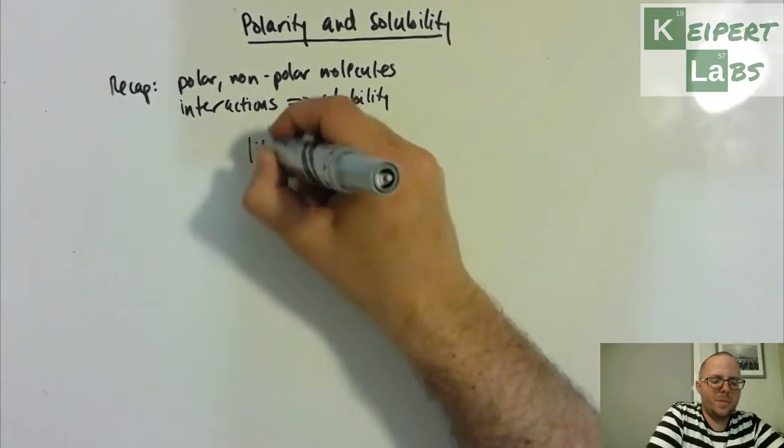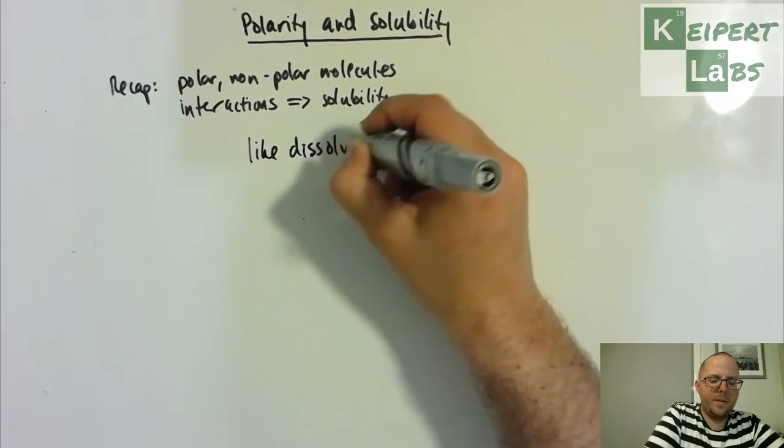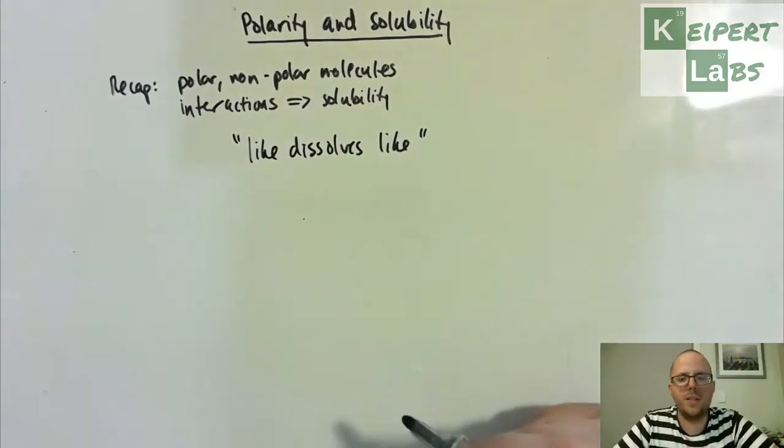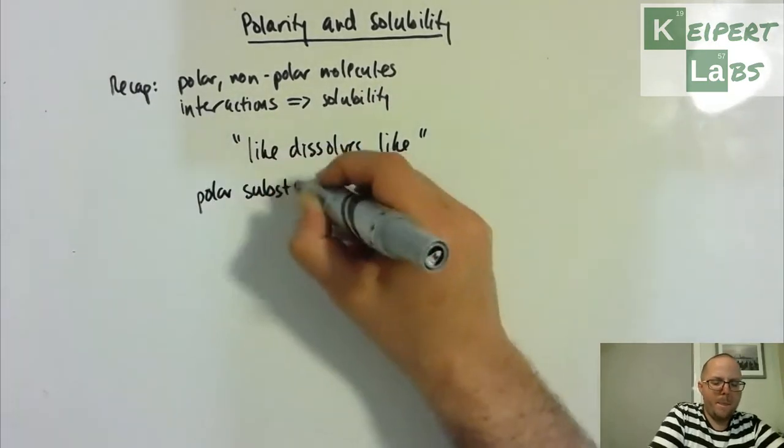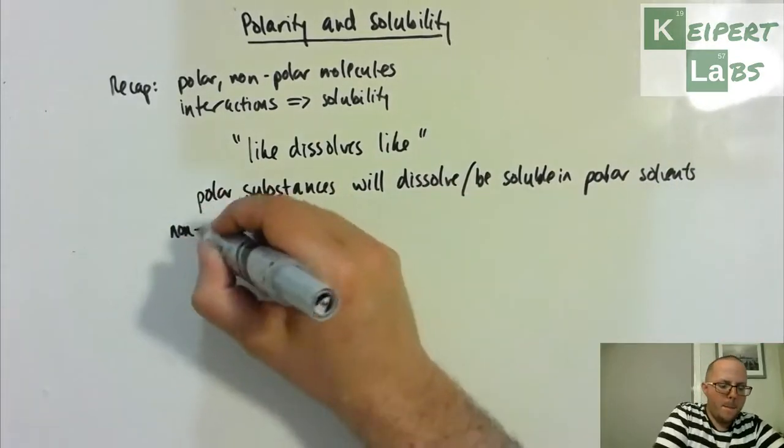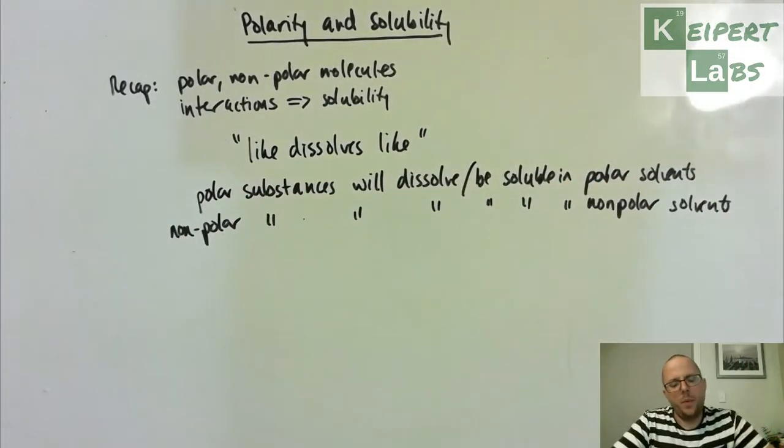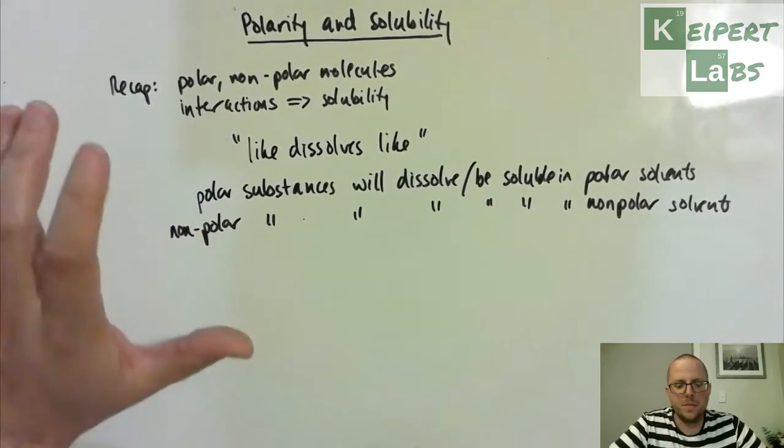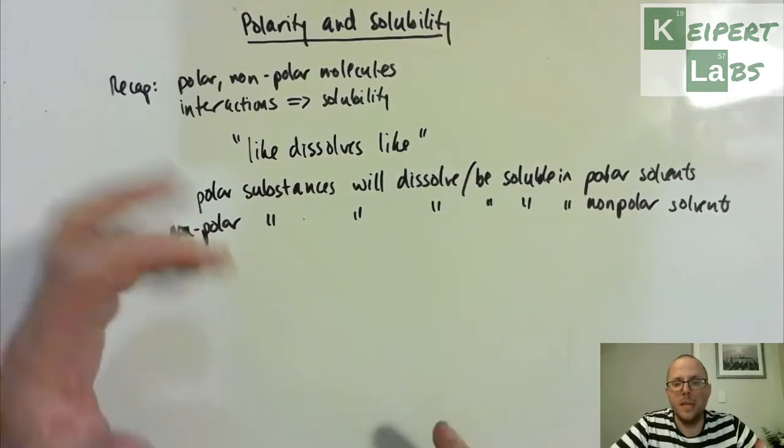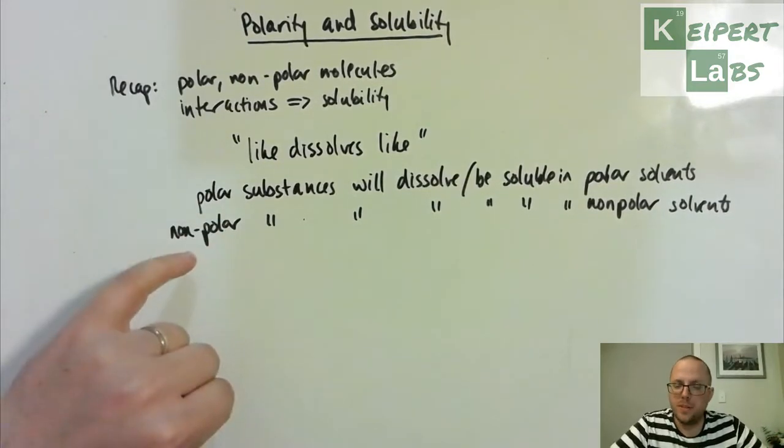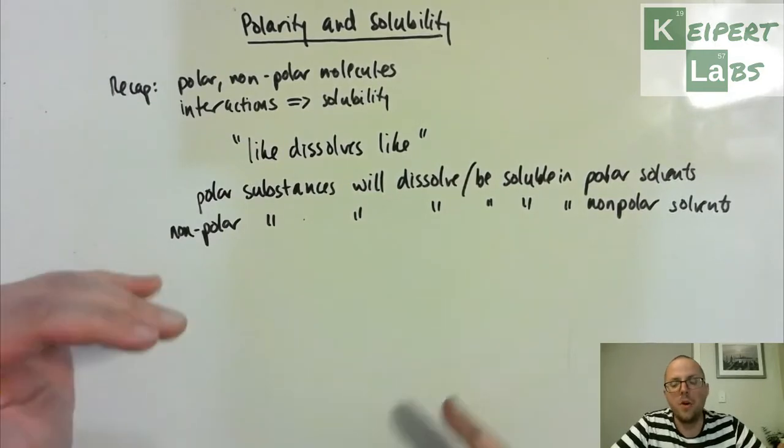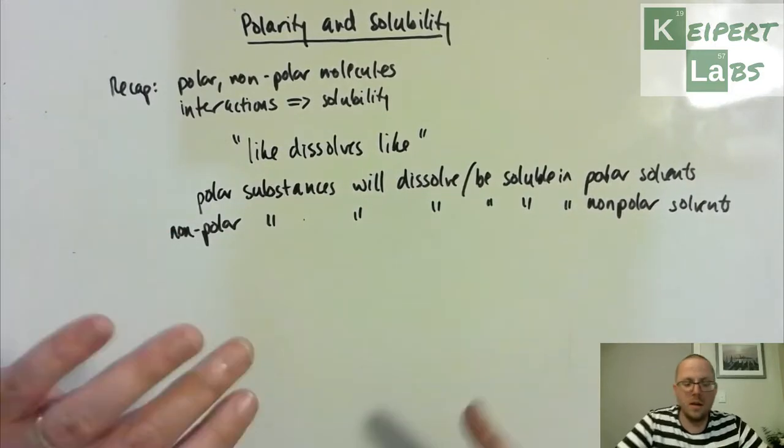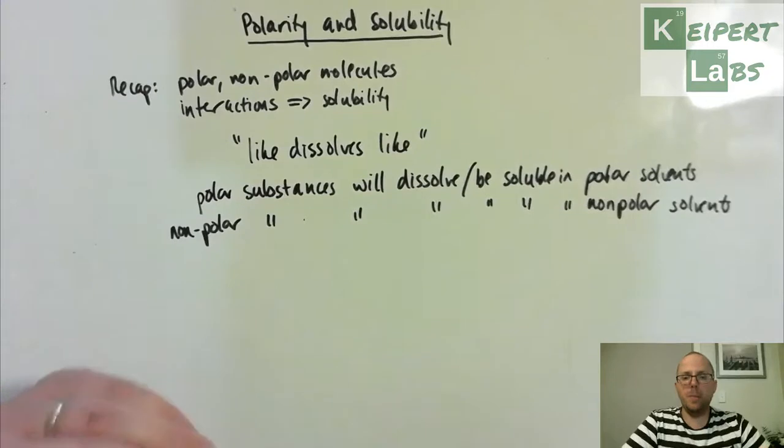And so the principle mentioned in the previous video, and we're going to unpack a little bit more now, is this phenomenon called like-dissolves-like. When we're looking at unpacking this statement, essentially what we're saying is that polar substances or polar solutes will dissolve or be soluble in polar solvents, and that non-polar substances will dissolve in non-polar solvents, so that polar and non-polar don't mix, but polar and polar and non-polar and non-polar will.